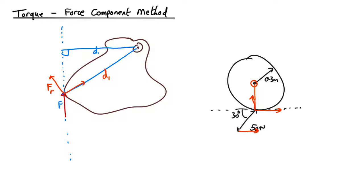So we're going to have the two components like this, and if that's theta, this is also going to be theta. So this one is going to be 50 cos theta, and that component is going to be 50 sin theta.